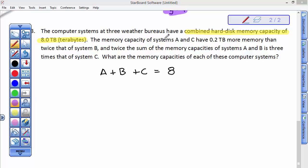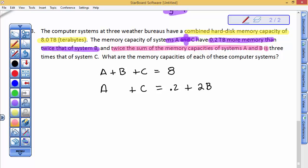The next sentence, the memory capacity of A and C, that must mean let's add them together, have 0.2 terabytes more than twice B. So A and C have 2 tenths more memory than twice B. And then finally, twice the sum of A and B is, that's where my equal sign is, twice the sum of A and B is 3 times that of C.